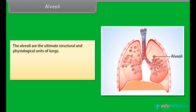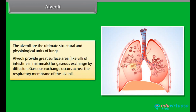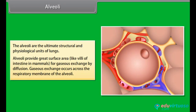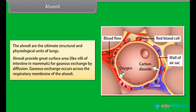Alveoli: The alveoli are the ultimate structural and physiological units of the lungs. Alveoli provide a great surface area — like villi of the intestine in mammals — for gas exchange by diffusion. Gas exchange occurs across the respiratory membrane of the alveoli.